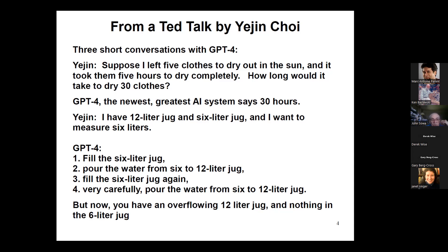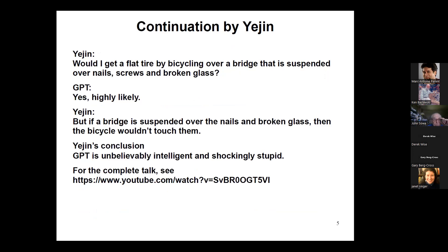Yejin then said: I have a 12-liter jug and a six-liter jug and I want to measure six liters. GPT-4 said to fill the six-liter jug and pour it into the 12-liter jug, fill it again, and pour carefully — but now you have an overflowing 12-liter jug and nothing in the six-liter jug. Clearly a mistake. Her third example: would I get a flat tire bicycling over a bridge suspended over nails, screws, and broken glass? GPT said yes, highly likely. But if a bridge is suspended over the nails and broken glass, the bicycle wouldn't touch them. Her conclusion: GPT is unbelievably intelligent and shockingly stupid.